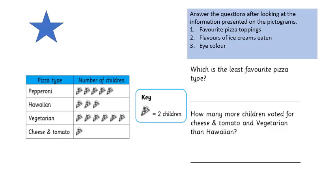For the one-star task we have three different pictograms. Here is the first pictogram on pizza types. Question one: which is the least favourite pizza type? Question two: how many more children voted for cheese and tomato and vegetarian than Hawaiian? Pause, look at the pictogram and answer the questions. On the following slide you'll see the answers so you can do your check.